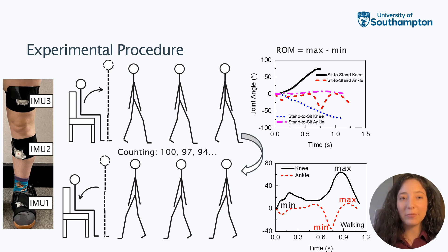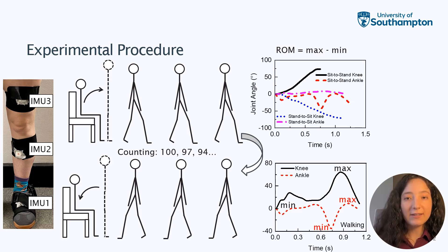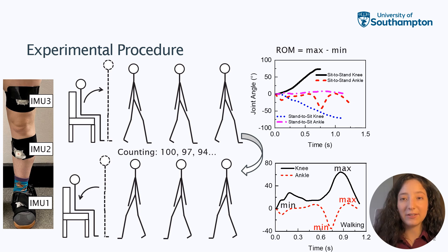Studies examining temporal spatial parameters exist; however, there is a deficit in information on lower limb kinematics, including ankle and knee range of motion. These outcome measures provide critical biomechanical markers for detecting musculoskeletal issues.